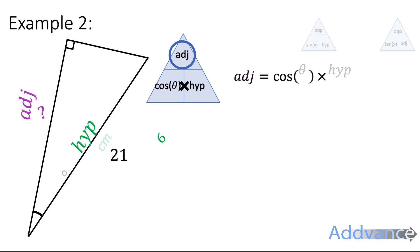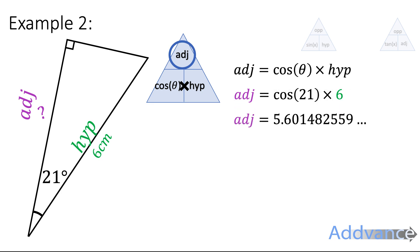Putting the numbers in, the angle is 21, the hyp is 6, and we type that into our calculator. And you should get 5.6014. Make sure you type that in and you get the same answer as I do. And you get 5.6 cm.